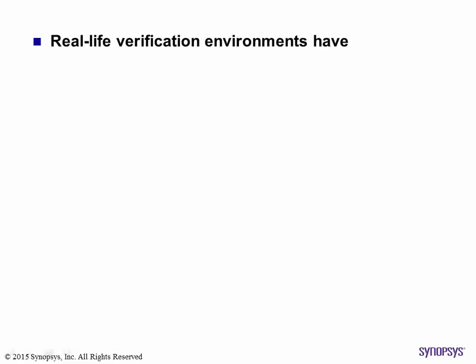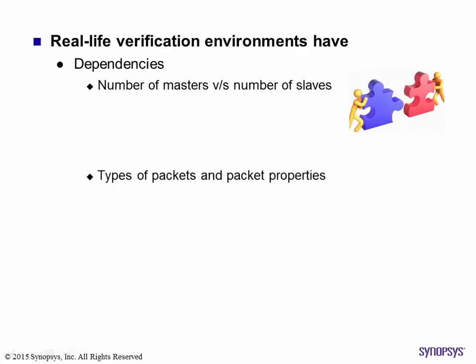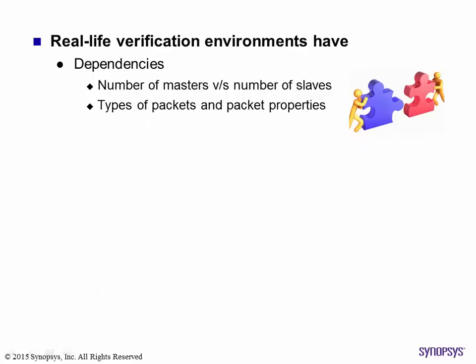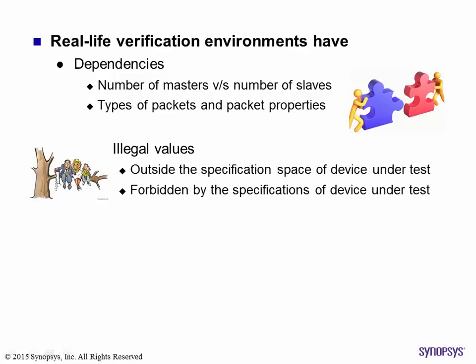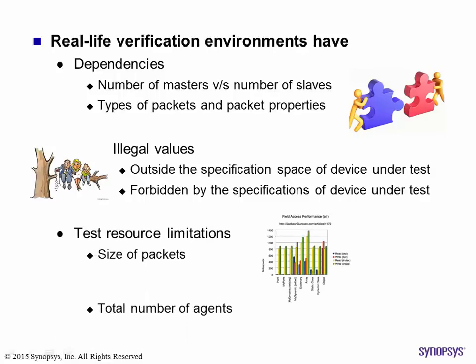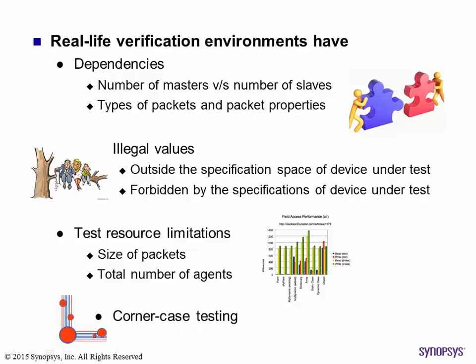But complex verification environments have many dependencies. For example, the number of slave agents allowed may depend on the number of masters present. And what about illegal values? Your specifications may expressly forbid certain values. To be able to run many simulations, you may want to limit certain parameters like size of transactions or number of components to maximize the use of your compute resources. Lastly, and very important, is the testing of corner cases like minimum and maximum sizes and addresses. But how do you control the randomization to consider these conditions?